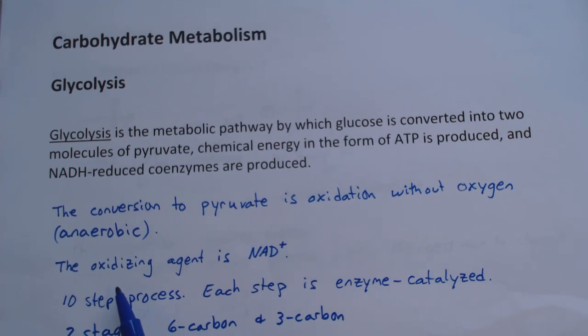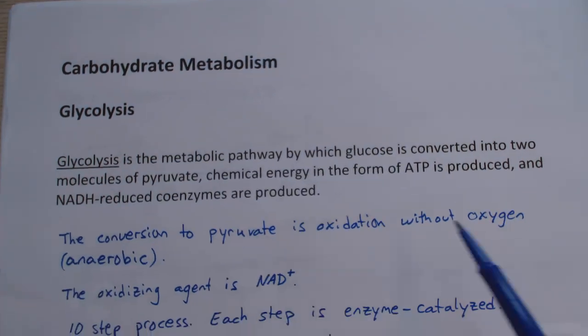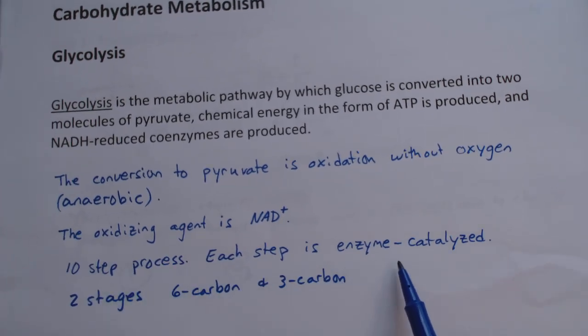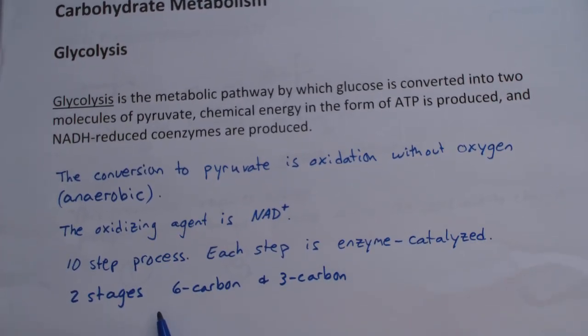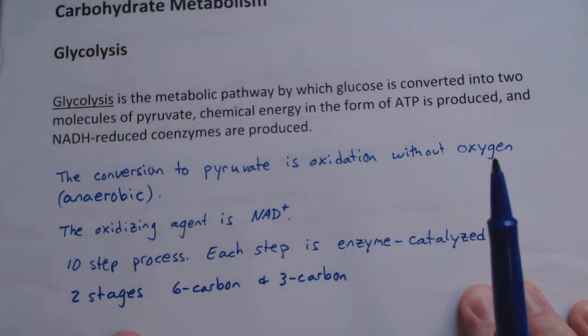The conversion to pyruvate is oxidation without oxygen - that's anaerobic. If oxygen is involved, then it's aerobic. The oxidizing agent in this metabolic pathway will be NAD+, which will be reduced to NADH. There are ten steps in the process. Each step is enzyme-catalyzed, and there are two stages: the six-carbon stage and the three-carbon stage.